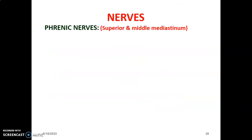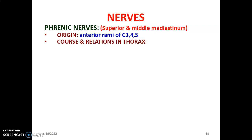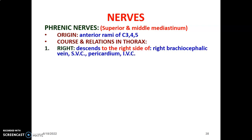The nerves of the mediastinum: we have the phrenic nerve, which is located in the superior and middle mediastinum. Its root value is C3 to C5, arising from the anterior rami of C3, C4, and C5. The course and relations of the phrenic nerve in the thorax are as follows.